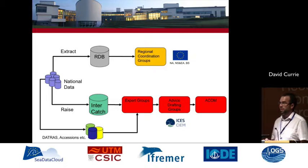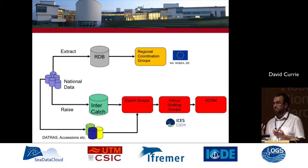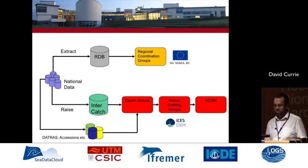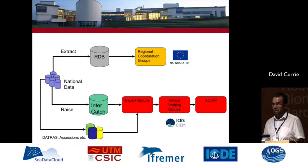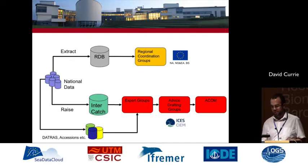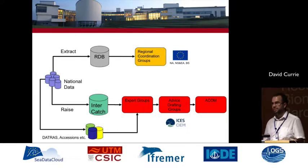The bottom route shows what happens for stock assessments. National data is again extracted from national databases, but we're talking about raising data here — taking sample data and raising it to the level of the population. This goes into an ICES system called Intercatch. Expert groups at ICES then use Intercatch, apply models, combine other data sources such as fishery surveys, and produce advice that goes through ACOM and is issued as formal advice on fishing activities for the next year.